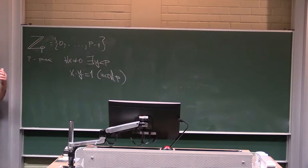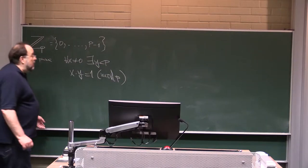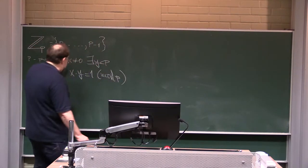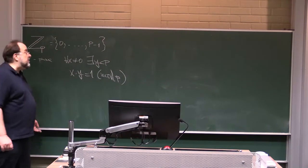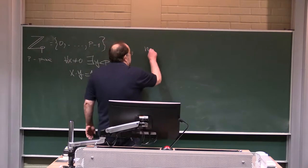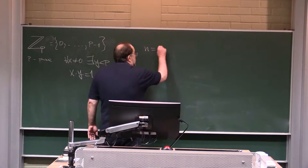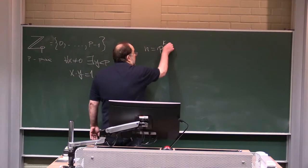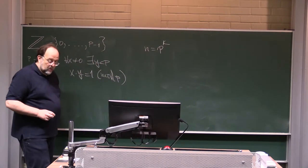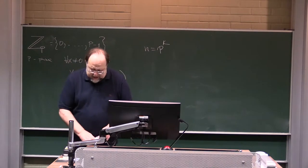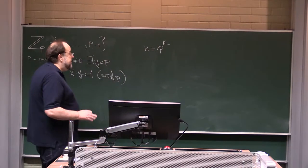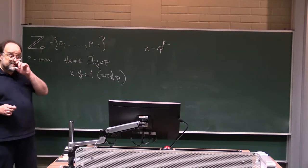Now, the question is, for what sizes do we have finite fields? It turns out that you can have a finite field, something that satisfies all the nice axioms of field theory, just in case the number of elements is equal to P to any integer K. If the number of elements is P to any integer K, then there exists a field with this many elements.